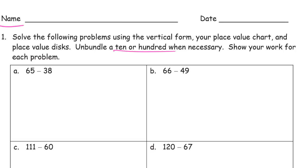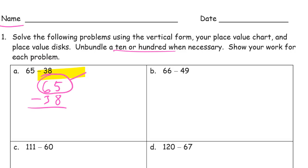65 minus 38. We start with our minuend on top. Leave yourself some room up here because you're going to need it for unbundling. 65, and just like with addition, we want our ones under our other ones and our tens under our other tens. The most common mistake is to forget that this is your minuend. Because we have a 5 and an 8, we can't subtract 8 from 5 — that's called subtracting up.